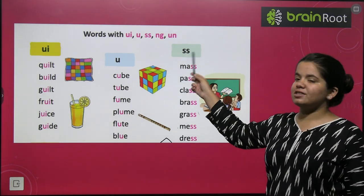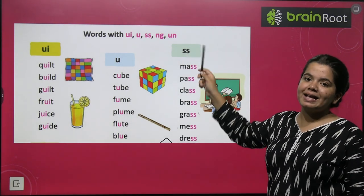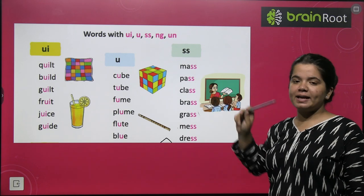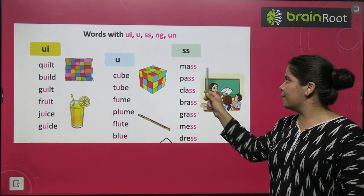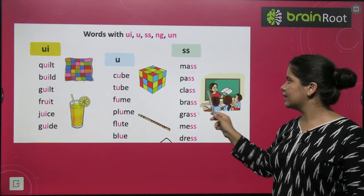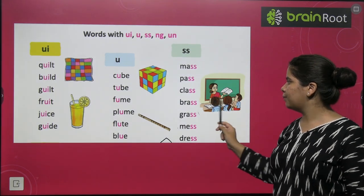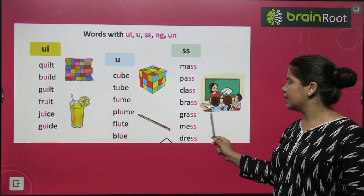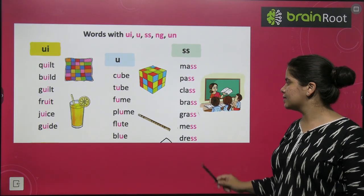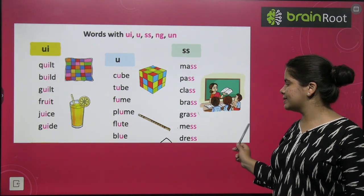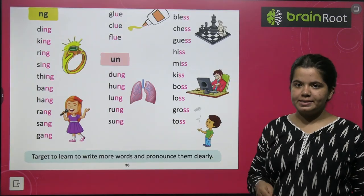Double S words — words with the double S sound: mass, pass, class, brass, glass, mess, dress.